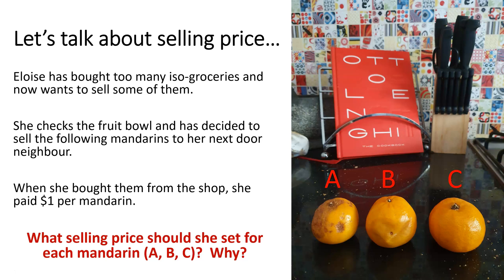So Eloise has bought too many ISO groceries and now wants to sell some of them. She checks the fruit bowl and has decided to sell the following mandarins to her next door neighbour. When she bought them from the shop, she paid $1 per mandarin. So the question I want you to think about to start with is what selling price should be set for each mandarin? So we've got Mandarin A, B and C here.